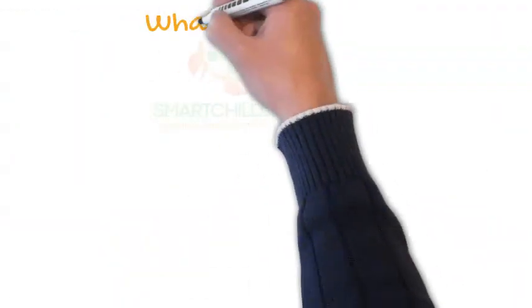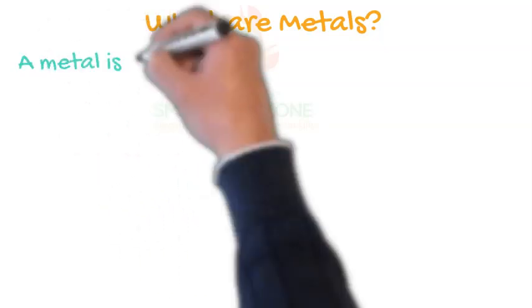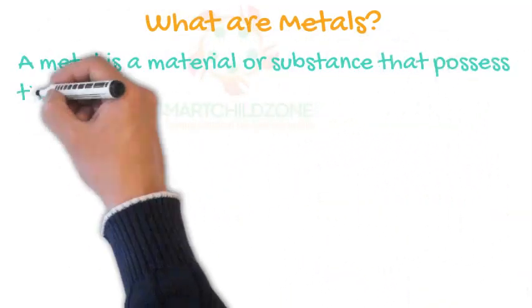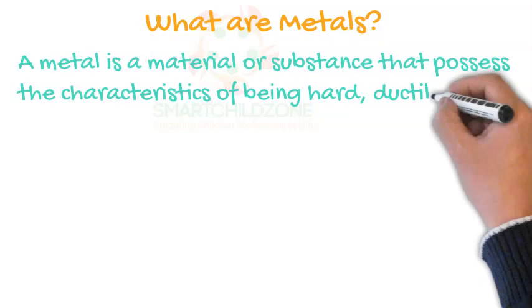What are metals? A metal is a material or substance that possesses the characteristics of being hard, ductile, and able to conduct electricity.